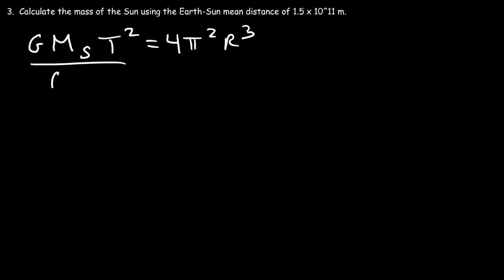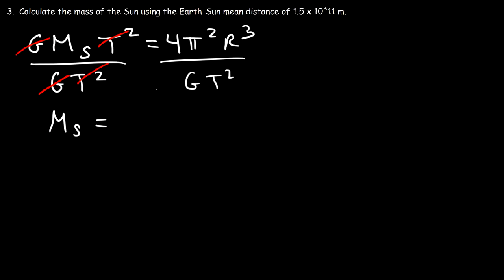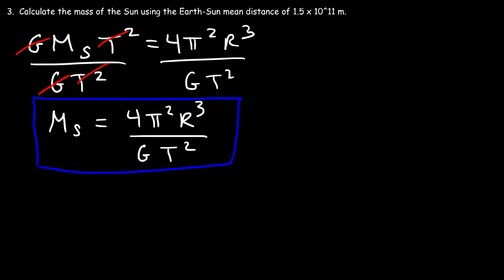To solve for M_sun, divide both sides by G·T²: M_sun = 4π²R³ / (G·T²). This formula can be used to find the mass of any planet or the Sun, where T is the period of an object orbiting it. To find the mass of the Sun, use Earth's period. To find the mass of the Earth, use the Moon's period, since the Moon orbits the Earth.